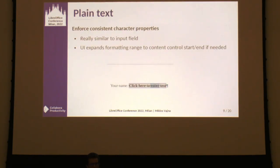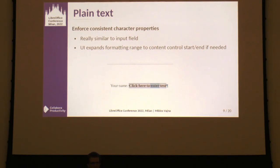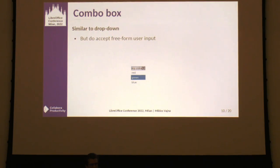Then there is the plain text type, which is somewhat odd — we did all this work to have rich text inside content controls, and of course then you want the opposite: a type that locks it down and ensures plain text. This only makes sense when your document is full of content controls for all inputs. If one word is made bold, due to this constraint, the entire content control will be marked as well. Finally, the most recent type is the combo box, which is very similar to dropdown but allows free-form user input.